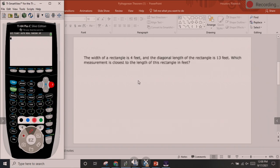It says the width of a rectangle is 4 feet and the diagonal length of the rectangle is 13 feet. Which measurement is closest to the length of this rectangle? Our keyword here is diagonal. Diagonal is simply a slanted line that cuts across a four-sided figure. It could be a rectangle, it could be a square. The key is the diagonal cuts across.